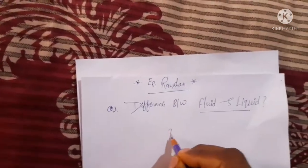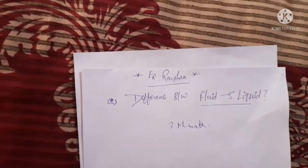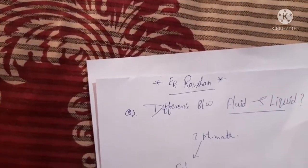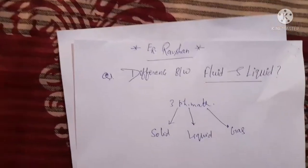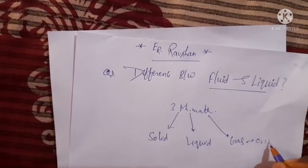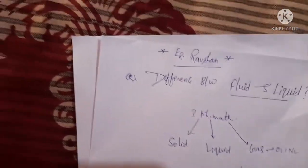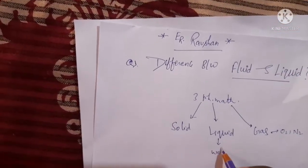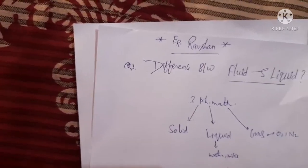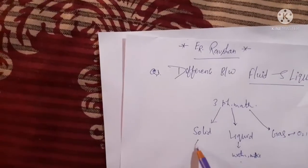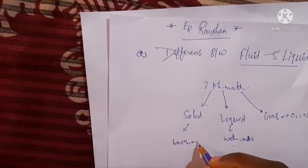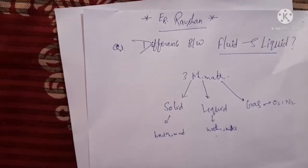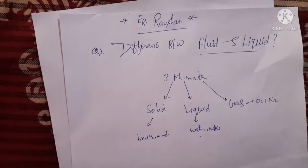Now we differentiate here. You know the three phases of matter: solid, liquid, and gas. Gas includes oxygen, nitrogen, and so many things. And liquid includes water, milk, and so many things. Here we include bricks, honey, and wood — these are solid particles. So the three phases of matter are solid, liquid, and gas.